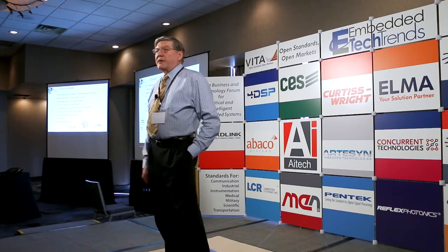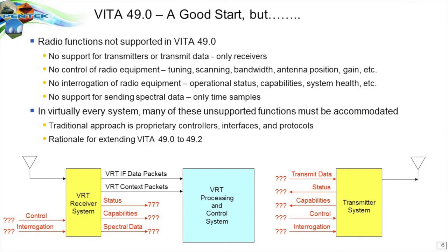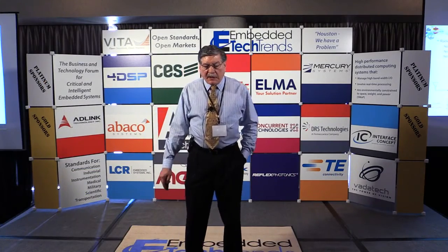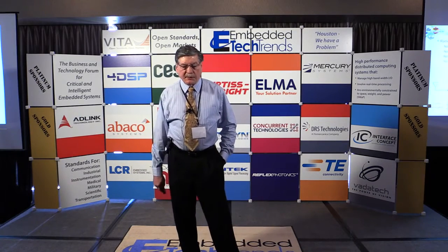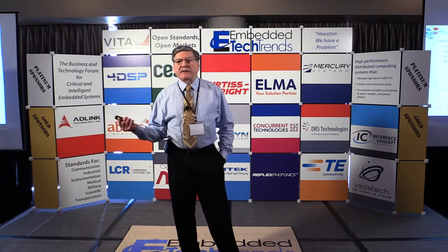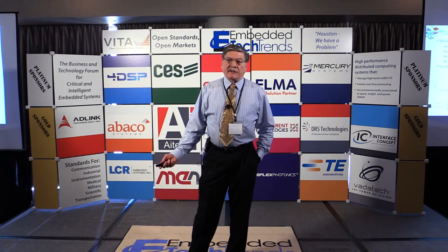Vita 49.0 was a good start, but it didn't do a lot of things we need. For one thing, it didn't do anything for transmitters — radar needs a transmitter. There was no control of the radio equipment. There was no interrogation: is my system working correctly, is it healthy, what are its capabilities? All of these things were missing in Vita 49.0. And lastly, there was no support for transferring spectral data, which is a very common application for spectral survey. This lack was really the rationale for Vita 49.2.